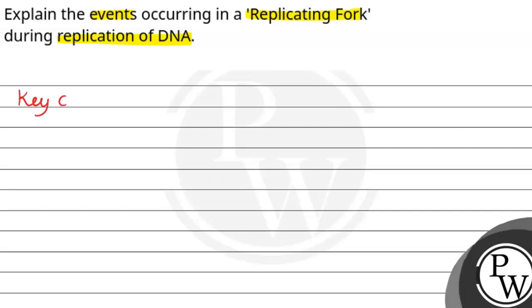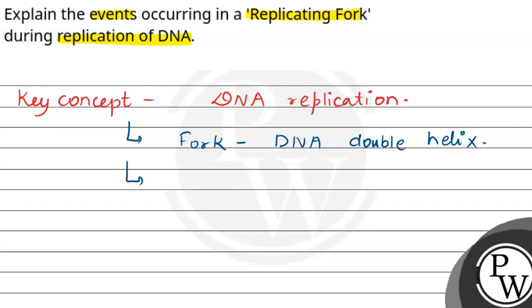Let us see the key concept. The key concept is DNA replication. In DNA replication, there is a DNA replication fork. This is the area where the DNA double helix is unwound and copied to produce two identical DNA molecules.